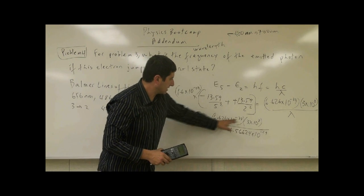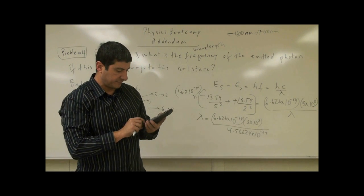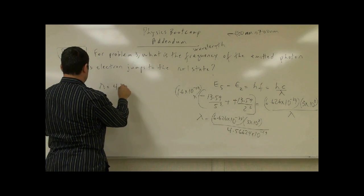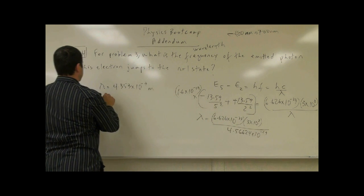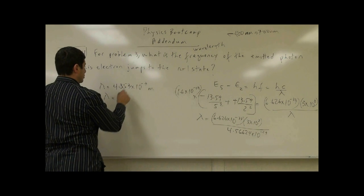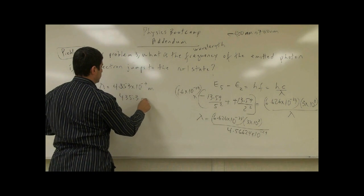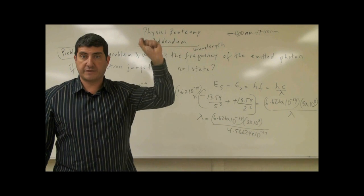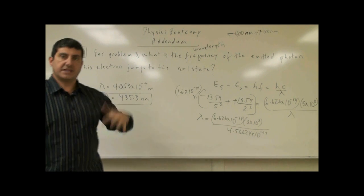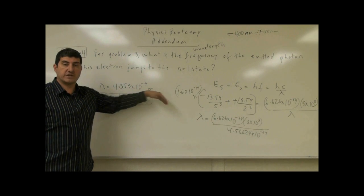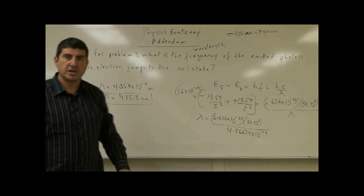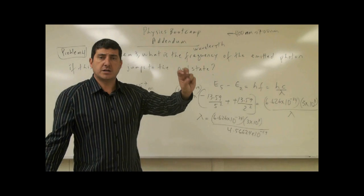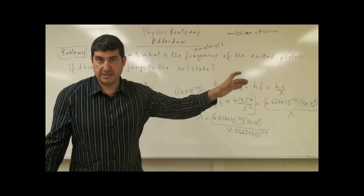Inverting and solving, lambda equals 4.353 times 10 to the minus 7 meters, which is 435.3 nanometers. That is one of the Balmer lines — the jump from the fifth to the second orbit. The others should be approximately 410, 486, and 656 nanometers, appearing as two violet lines, a green line, and a red line.